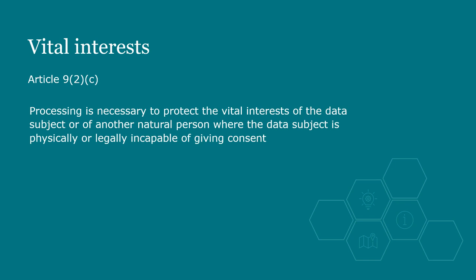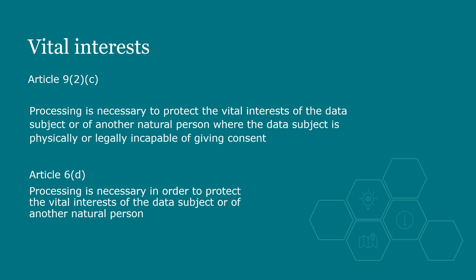The vital interests condition might be applicable if a controller needs to process special category data in order to protect the vital interests of an individual in situations where they may be incapable of giving consent. This almost exactly mirrors the vital interests basis for processing in Article 6 — remember, this is a matter of life and death. For example, processing to enable the treatment of an unconscious traffic accident victim. The Article 9 condition states this only applies if the data subject is physically or legally incapable of giving consent.